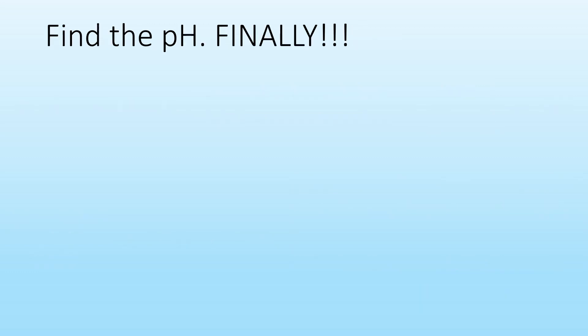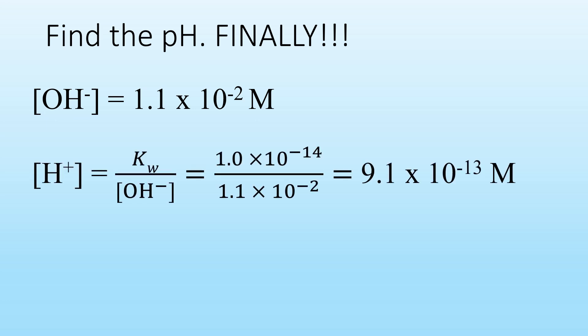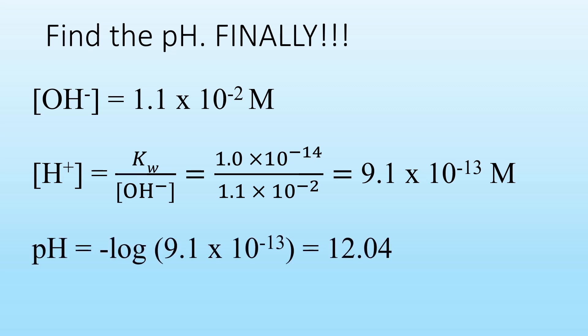Now we can find the pH of this solution. We know the concentration of hydroxide. I'll use the equation Kw over the concentration of hydroxide to solve for the concentration of H+, which is 9.1 times 10 raised to the minus 13 molar. Finally, the pH is the negative log of this concentration, giving a pH of 12.04 — a basic solution.